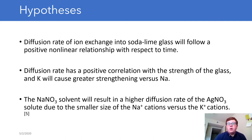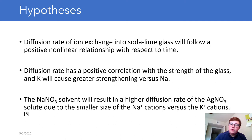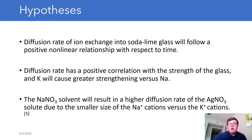Second, the diffusion rate will cause a positive correlation with the strength of the glass, and potassium will cause greater strengthening versus sodium. We expect potassium to have greater strengthening because it has a larger atomic radius, which increases the overcrowding effect and increases the compressive strength overall. Finally, the sodium solvent will result in a higher diffusion rate of the silver nitrate solute due to the smaller size of the sodium atoms — so while they provide less strengthening, they improve the diffusion of ions into the material.